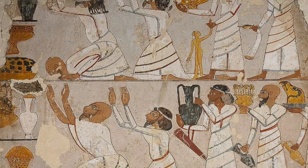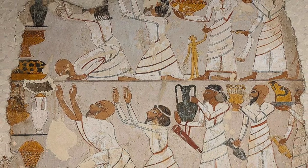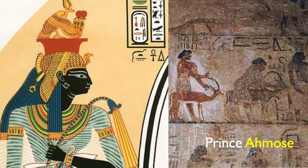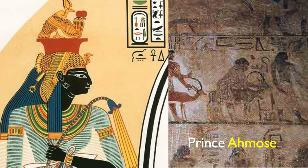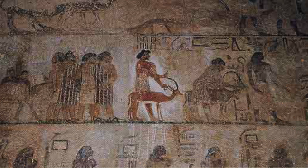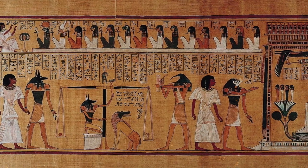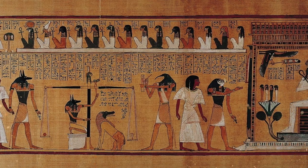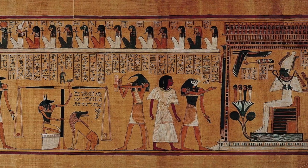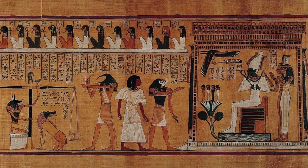The Hyksos rule was marked by a period of relative peace and prosperity, but it wasn't to last. The Egyptians, led by the Theban prince Ahmose, rose up against the Hyksos and expelled them from the land. This marked the end of the Second Intermediate Period and the beginning of the New Kingdom, as the Egyptians re-established their central government and embarked on a new era of greatness.